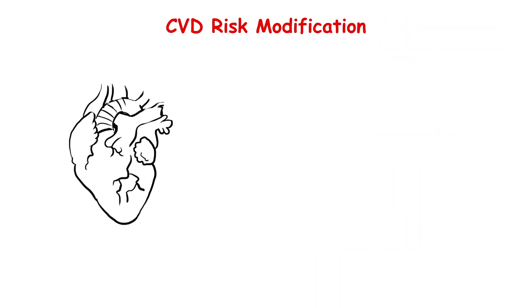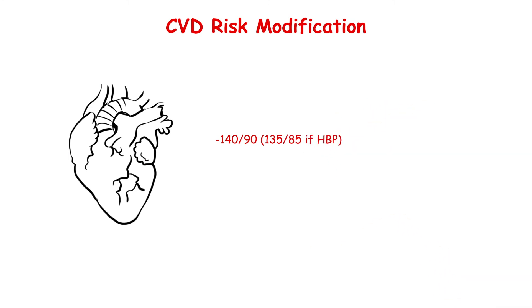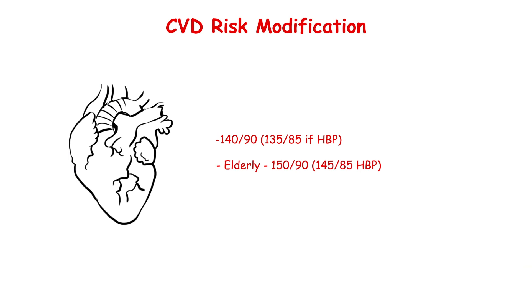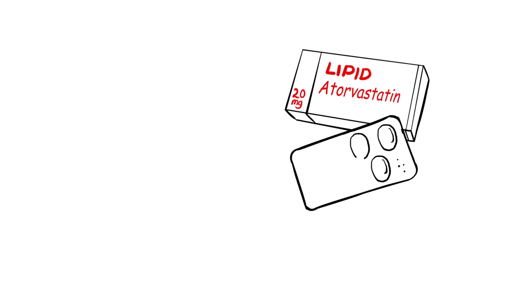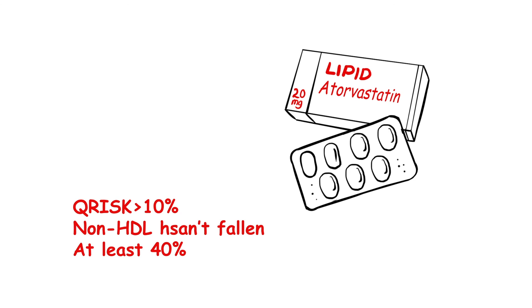With regards to diabetes, we should also be aware of cardiovascular risk modification. Blood pressure targets are 140/90, with 135/85 at home. For patients above 80, the target is slightly looser at 150/90, or 145/85 at home. ACE inhibitors are typically first-line for type 2 diabetics regardless of age or ethnicity. For lipids, atorvastatin 20mg should be initiated in any diabetic with a Q-risk score above 10%, up-titrated if non-HDL hasn't fallen by at least 40%. Smoking cessation, weight loss, and alcohol control are also important.